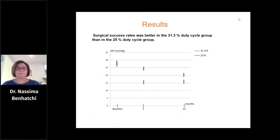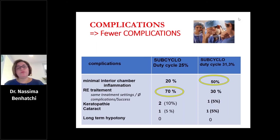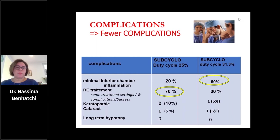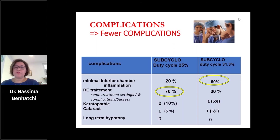There were few complications. The most common was minimal anterior chamber reaction, which was rapidly regressive. It was higher in the group treated with 31.3% duty cycle. However, in the 25% duty cycle group, the rate of retreatment was higher. We used the same parameters for retreatment, and the results were good with higher efficacy without more complications.